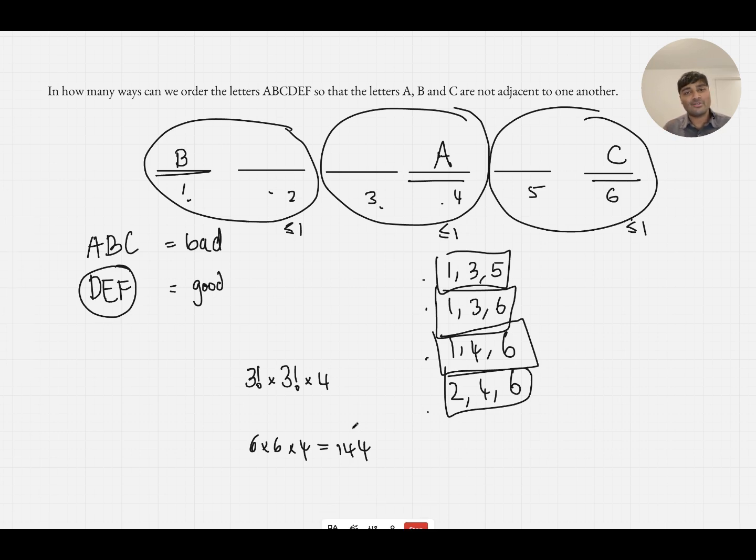So there are 144 different ways to arrange these six letters so that A, B and C are not adjacent to one another. And then seen there.